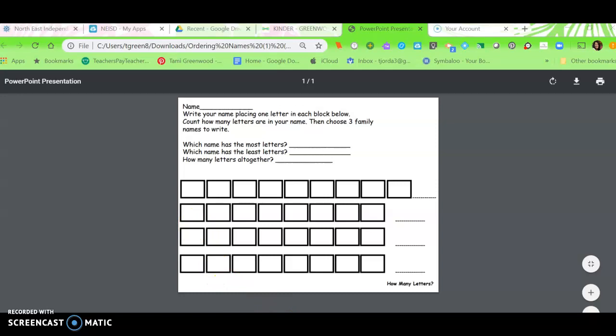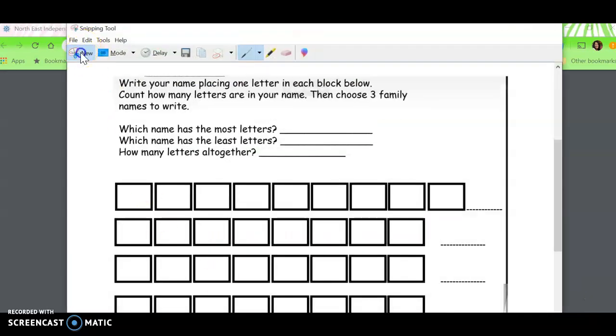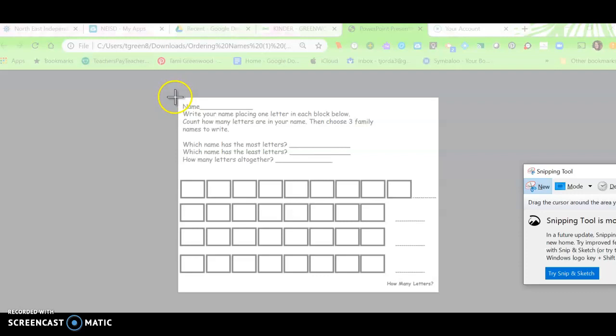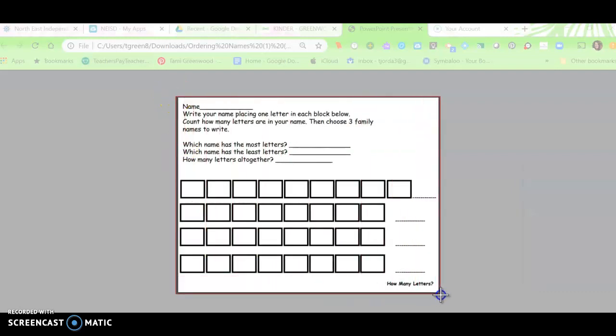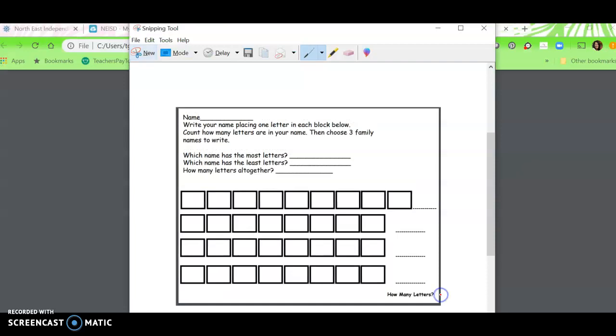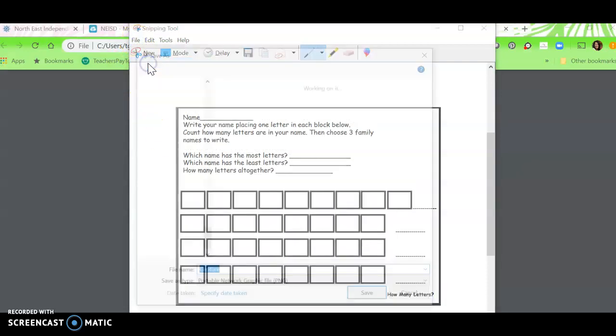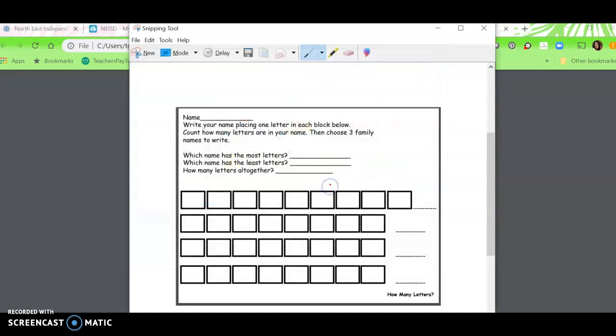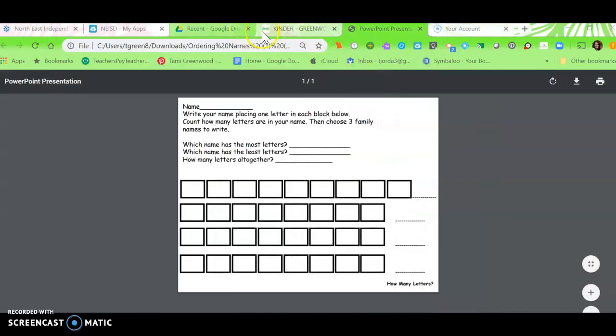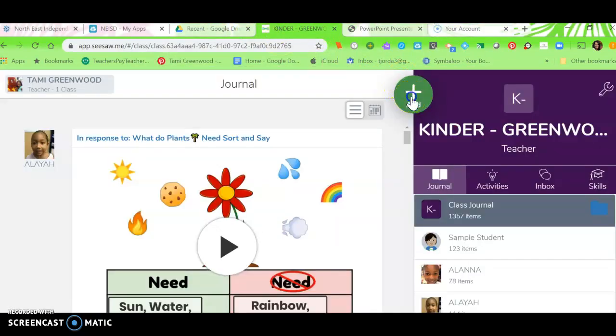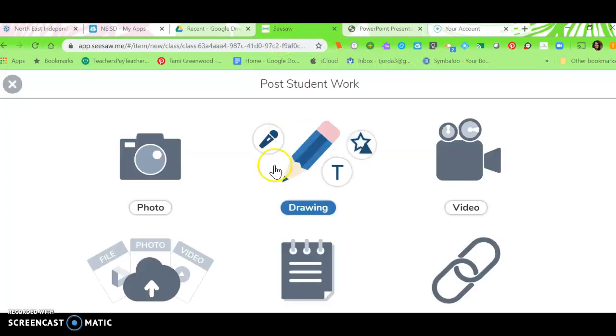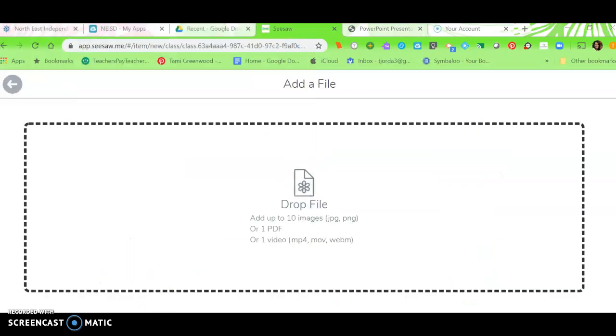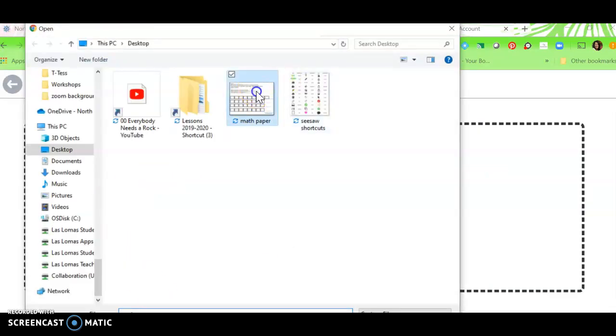And I'm going to use the snipping tool. And I'm going to snip the picture that I want, then I'm going to save it to my desktop. Then I would go to Seesaw, push the green plus to post to my journal, upload a photo, and I'm going to find it on my desktop, right there.